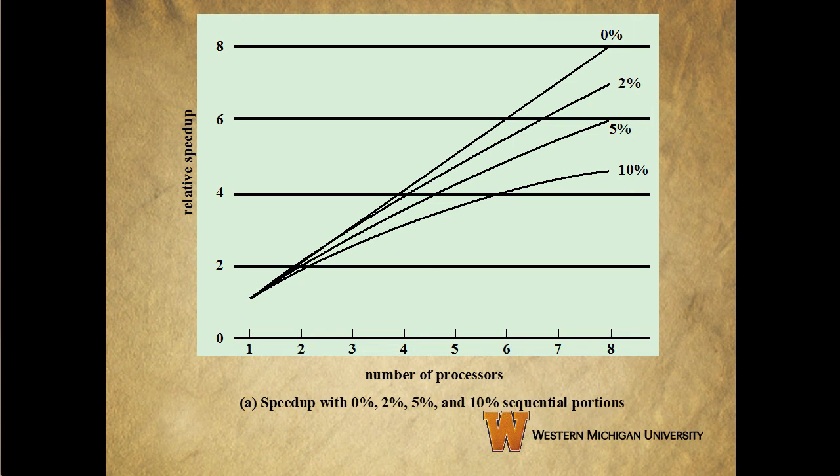What this shows us is that with eight processors and infinitely parallelizable code — nothing that has to run serially — we can get a one-to-one speedup; we can actually get eight times the performance out of the eight processors. But something to keep in mind, as Amdahl's Law shows us, is that with just a fairly small amount of inherently serial code — code that can only be run sequentially — we start to get some major drops in speedup.